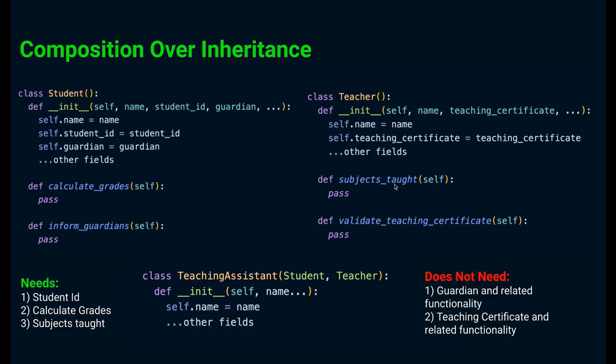Now we have teaching assistants. How would you implement this class? The teaching assistants in universities are usually students who have done the course before, so they would have a valid student id. We would also need the subjects taught method from the teacher class to know what all courses the teaching assistant is part of. But the teaching assistant does not need to have a valid teaching certificate.